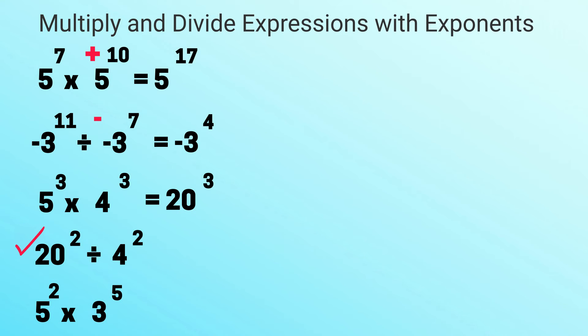In this example, we have division, different bases, 20 divided by 4. You have the same exponent of 2 or square. So 20 divided by 4 is 5, keep the exponent of 2.